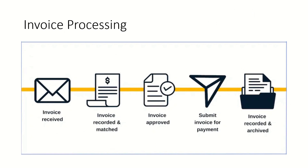The first step is the invoice is received. The second step is invoice is recorded and matched. The third step is invoice is approved. The fourth step is to submit the invoice for payment. And the fifth step is invoice recorded and archived.